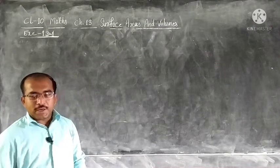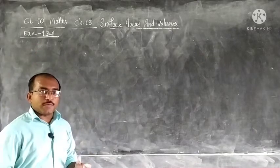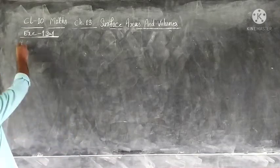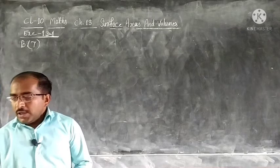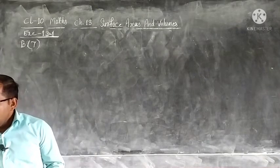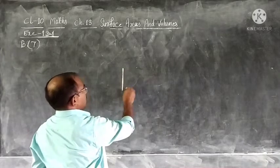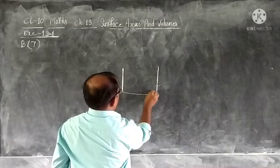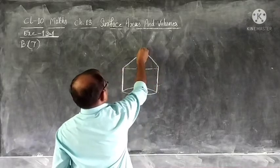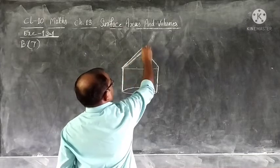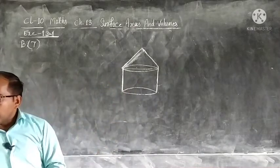Hello children. In this video we are going to start question number 7 of your exercise 13.1. Continuation of previous videos. Let us read the question first. A tent is in the shape of a cylinder surmounted by a conical top. Usually we see the tent in this shape — a cylinder with a conical top.